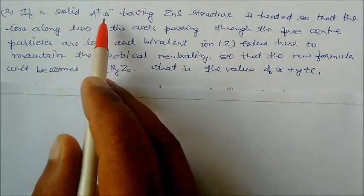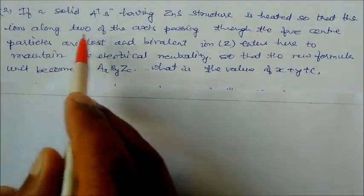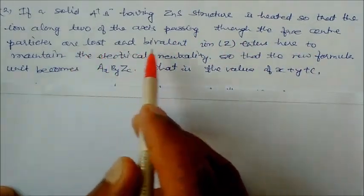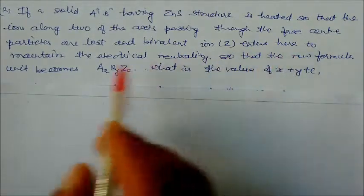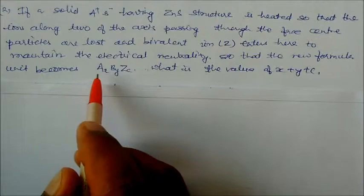If a solid A+B- having a zinc sulfide structure is heated so that the ions along two of the axes passing through the face center particles are lost and a bivalent ion enters to maintain electrical neutrality, the new formula unit becomes AxByCz.